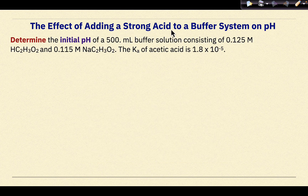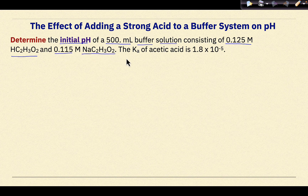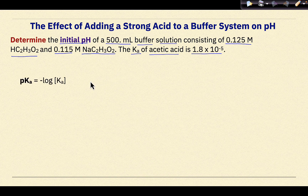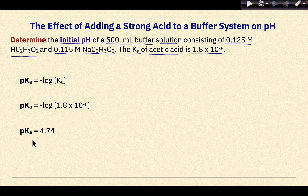The effect of adding a strong acid to a buffer system on pH. Determine the initial pH of a 500 milliliter buffer solution consisting of 0.125 molar HC2H3O2 and 0.115 molar NaC2H3O2. The Ka of acetic acid is 1.8 times 10 to the negative 5. Looking at this problem, instead of doing an ICE table, we can use the Henderson-Hasselbalch equation, and the first thing we need to do is calculate the pKa value.